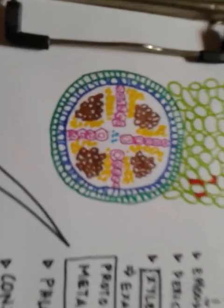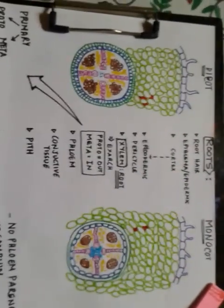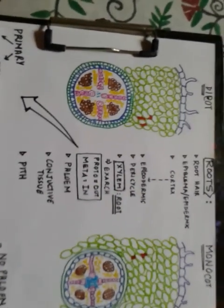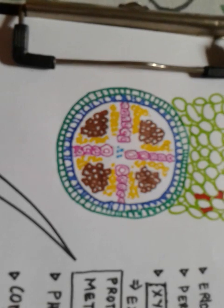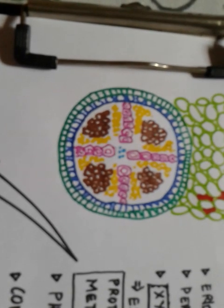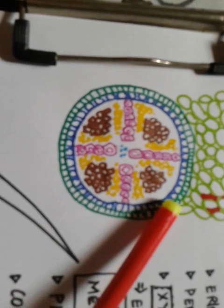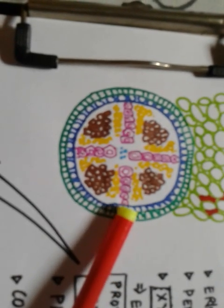The endodermis is actually the last layer of the cortex — I'll zoom in so you can see better. This green layer is the endodermis, and it's present in both monocot and dicot roots. Next is the pericycle, which is a thin layer of parenchymatous cells — shown here as the blue layer — present just beneath the endodermis. It protects the vascular bundle and is present in both monocot and dicot roots, so there's no difference there.